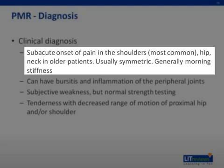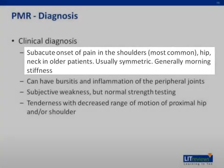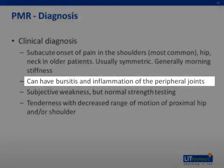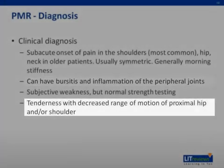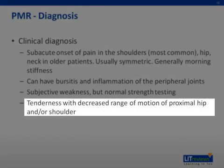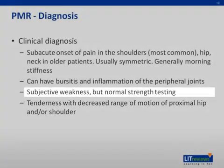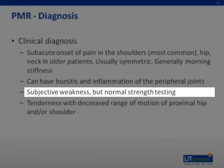Symptoms are usually symmetric and often accompanied by generalized morning stiffness. Pain can be accompanied by inflammation of the bursal sac around joints, or bursitis, as well as inflammation of the peripheral joints. Additionally, on exam, there's tenderness with decreased range of motion of the proximal shoulder and/or hip. Many patients experience subjective weakness, although strength testing on physical exam is often normal.